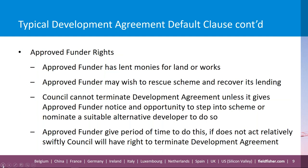The approved funder has typically lent money to the developer to buy land or undertake works and may wish to rescue the scheme and recover its lending. The typical default clause says the council cannot terminate the development agreement unless it gives the approved funder notice and allows it the opportunity to step into the scheme or nominate a suitable alternative developer — normally a period of months. You might want to consider whether a longer period is appropriate in the current environment. If the approved funder does not act swiftly, the council's right to terminate normally arises.